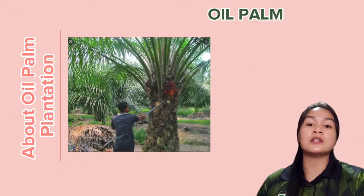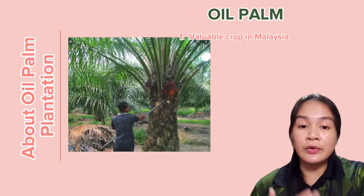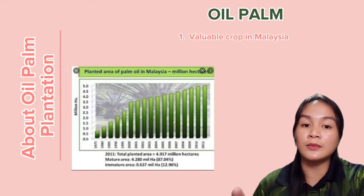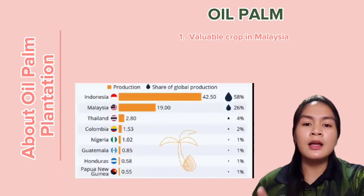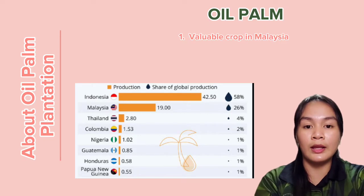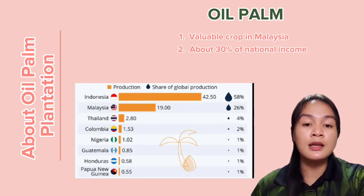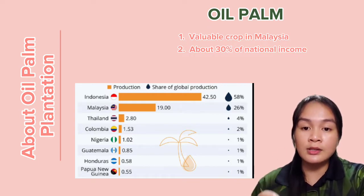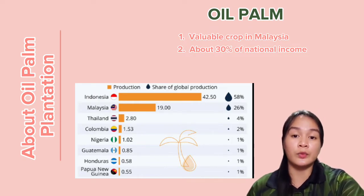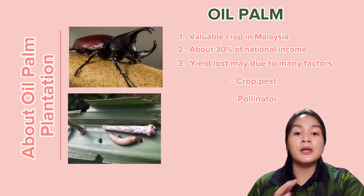Oil palm is a tropical tree crop and the most valuable crop in Malaysia. Because of their contribution to the country's balance of payments from export revenue, Malaysia became second after Indonesia, which is the first producer of palm oil and its products. About 30 percent of national income is from oil palm plantation, so if the yield of the crop decreases or is lost, it can cause a significant negative impact on Malaysia's economy.